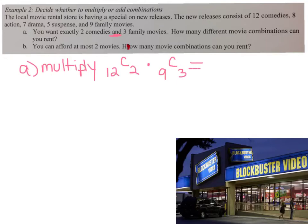When you put those in the calculator, you get 66 and 84. And 66 times 84 is 5,544 combinations. That's a lot of different combinations you could possibly watch.